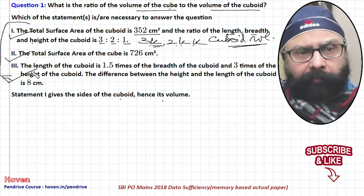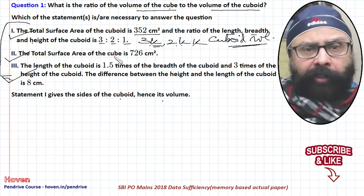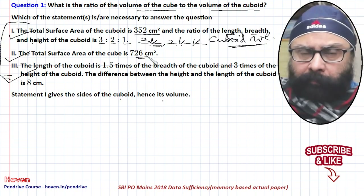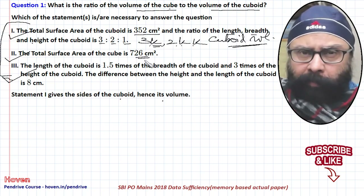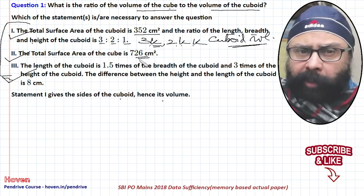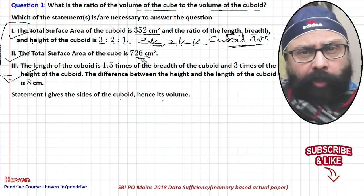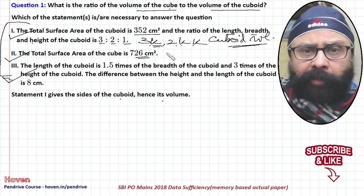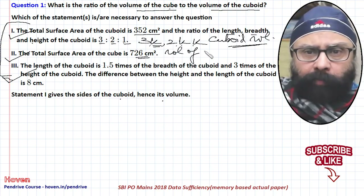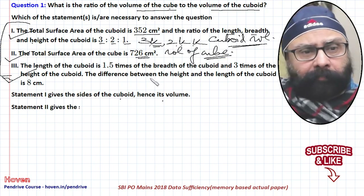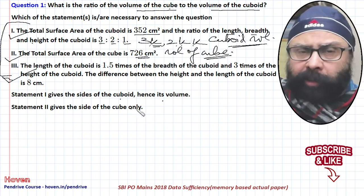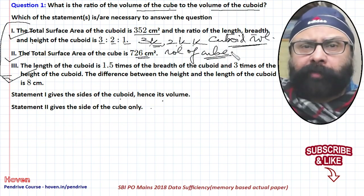Statement 2 gives the total surface area of the cube. The total surface area is connected to the side of a cube via a formula, so we can obtain the side and therefore the volume of the cube. Statement 2 gives us the side and volume of the cube only.